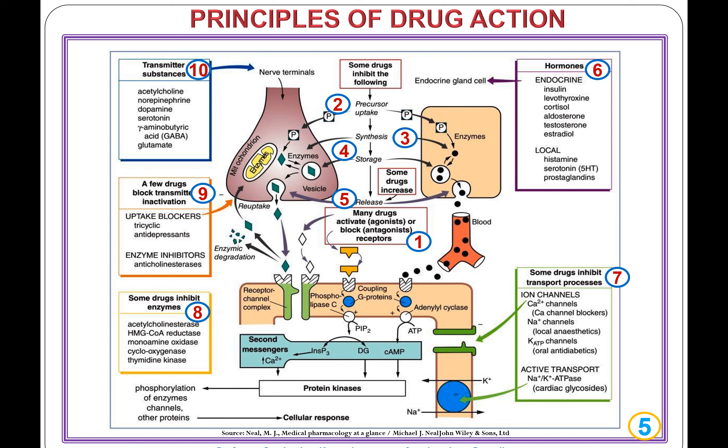Principle 9: a few drugs block transmitter inactivation, for example uptake blockers such as tricyclic antidepressants. Principle 10: some drugs mimic transmitter substances, for example acetylcholine, norepinephrine, dopamine, serotonin, gamma-aminobutyric acid, and glutamate.